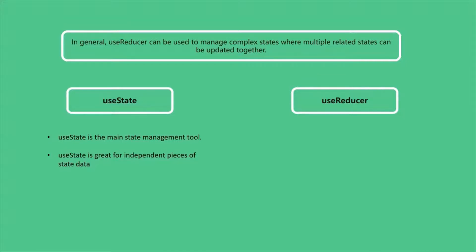useState is a better option when dealing with state updates which are easy and limited to a few kinds of updates. For example, if you don't have a lot of cases based on which you want to update the state, and also when you don't have an object as the state value, you can without any doubt use useState for state management.